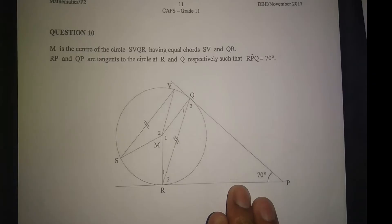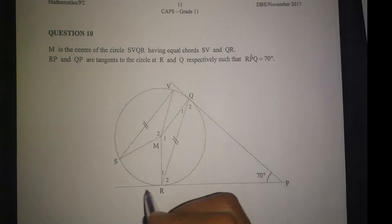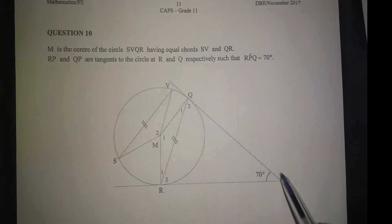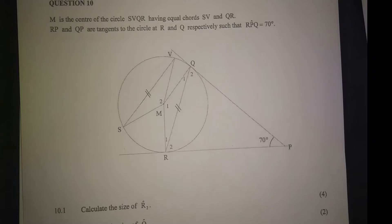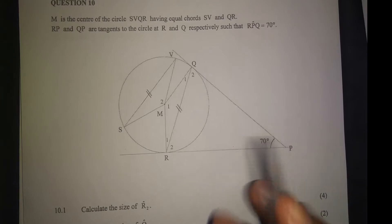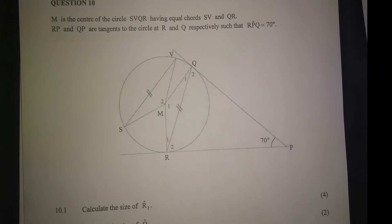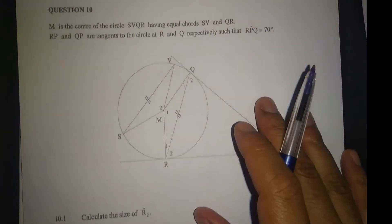We're going to use theorems. Theorem 8 I think - tangents from the same point are equal, so this makes an isosceles triangle. Also using Theorem 9, 7, and Theorem 4 about equal chords. This is a corollary. Now let's answer question 10.1 - calculate the size of angle R.